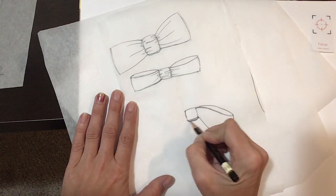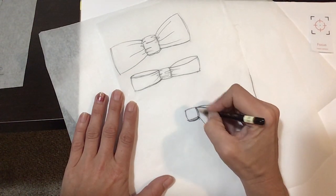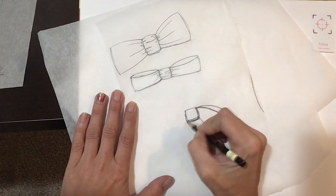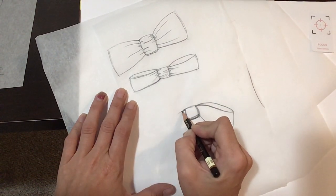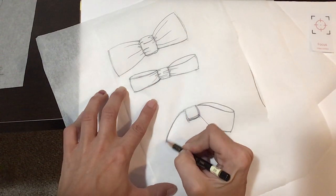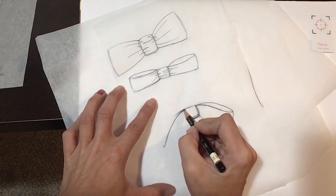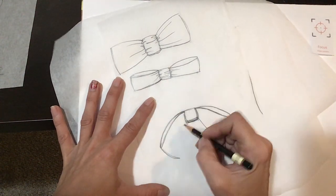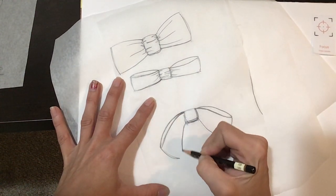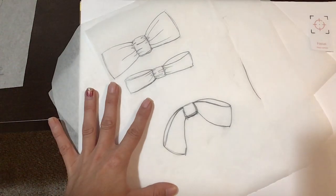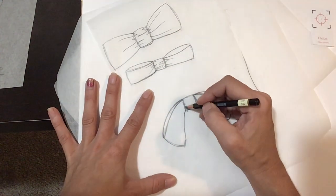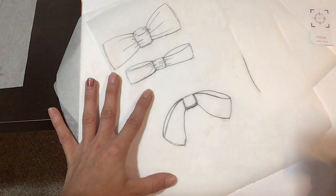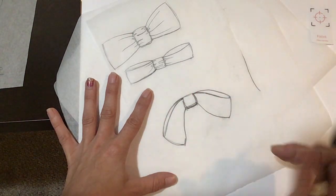I think this should be a little bigger. Like that and that would be a droopy bow. Now let's add some ties, let's say it has a tie.